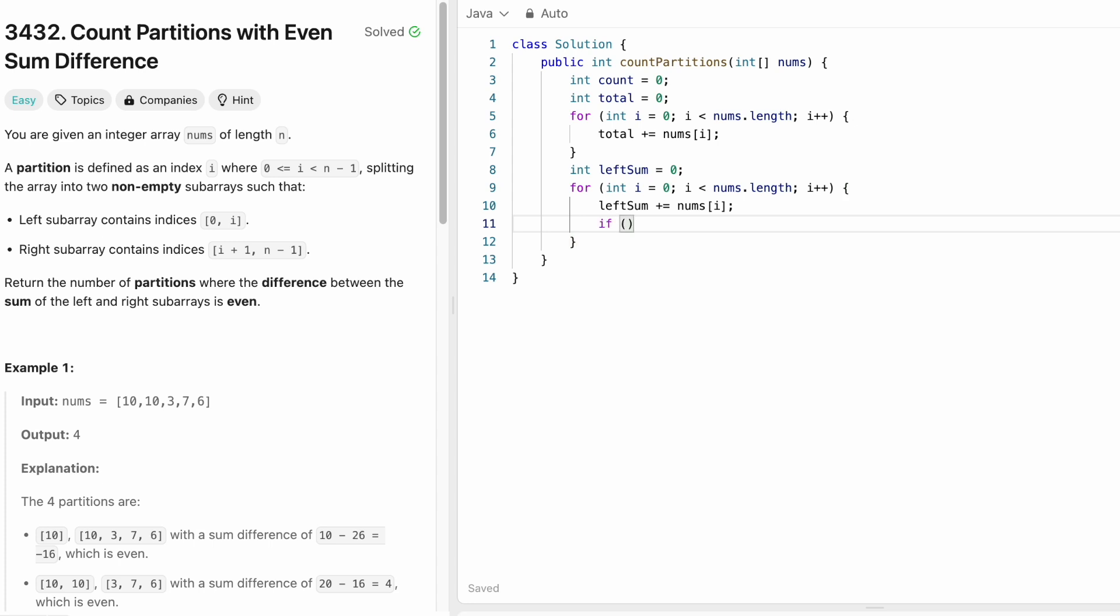We have to check if the difference between the left sum and the right sum. Right sum is total minus left sum. So instead of storing it inside a variable, I'm calculating right sum here. So let's store this entire thing in braces and check if this is even. If this difference is even, it will leave a remainder 0. If this is the case, increment our output variable count.